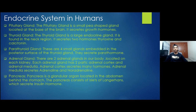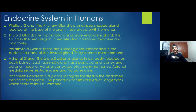The thyroid gland is a large endocrine gland found in the neck region. It secretes two hormones: thyroxine and calcitonin, which help in various functions of the body.